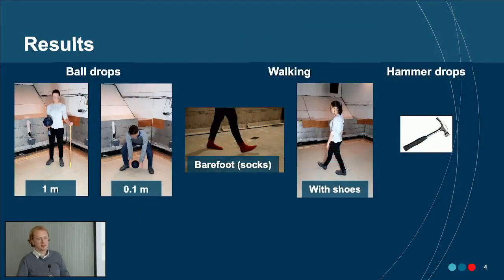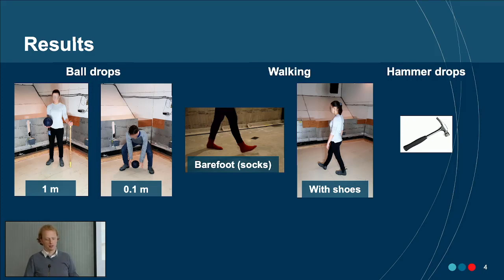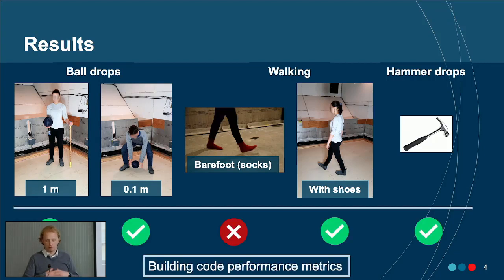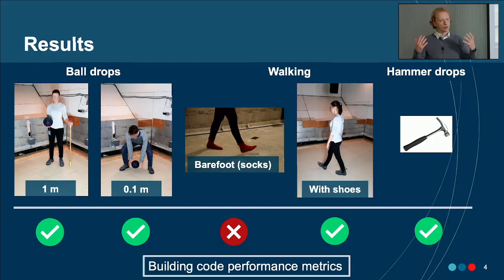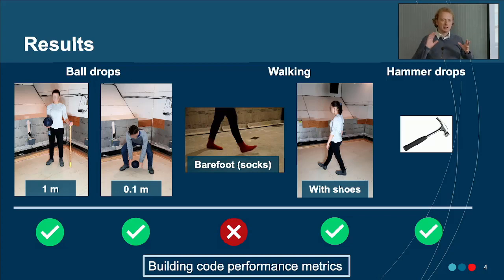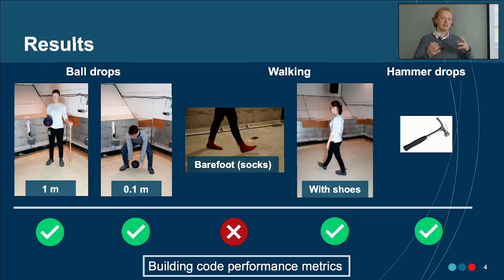For the results, we looked at five different impact sources: a rubber ball dropped from two heights, barefoot walking, walking with shoes, and a metal hammer dropped from a certain distance. We then compared the annoyance ratings for each of these sources to the performance metrics used in building codes. Overall, the results are quite good — for most sources the performance metrics are able to capture the annoyance caused by these sounds. However, there is an exception for sounds created by barefoot walking.